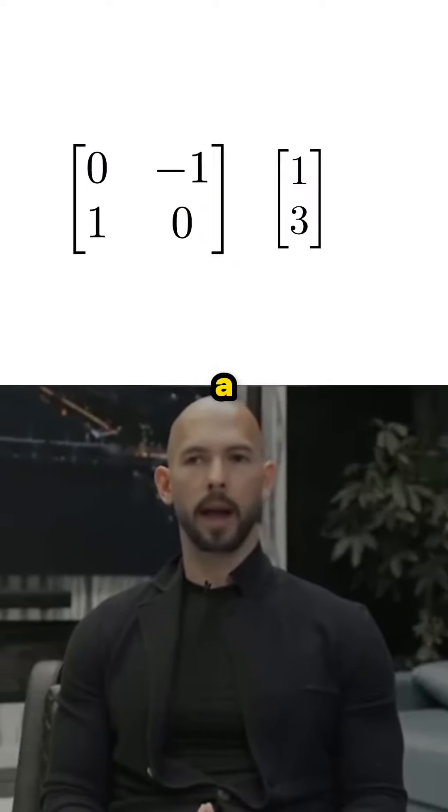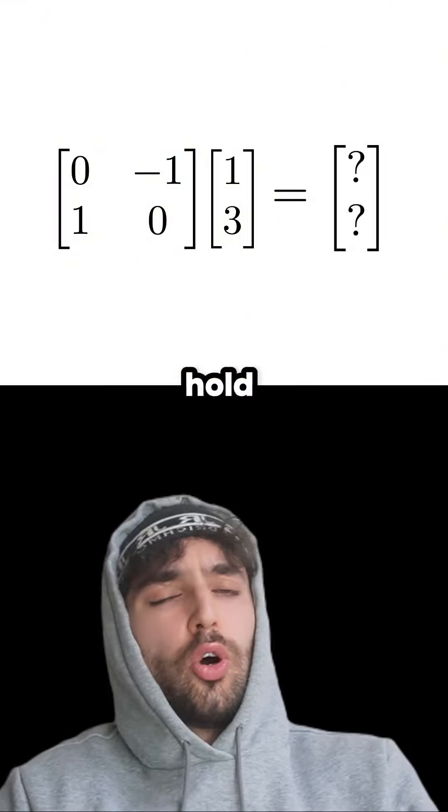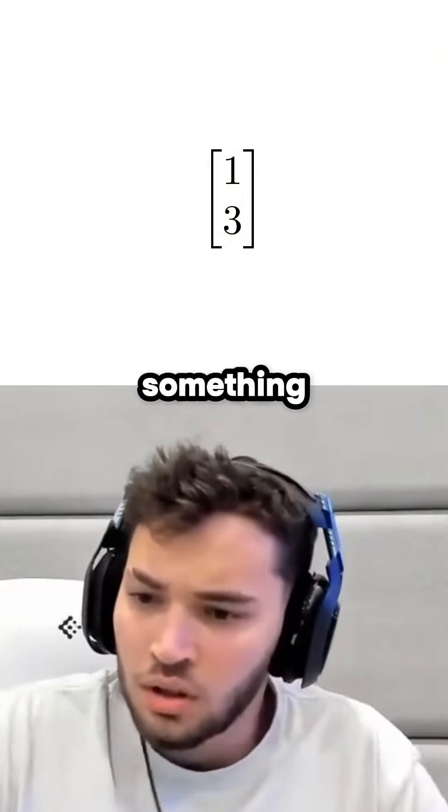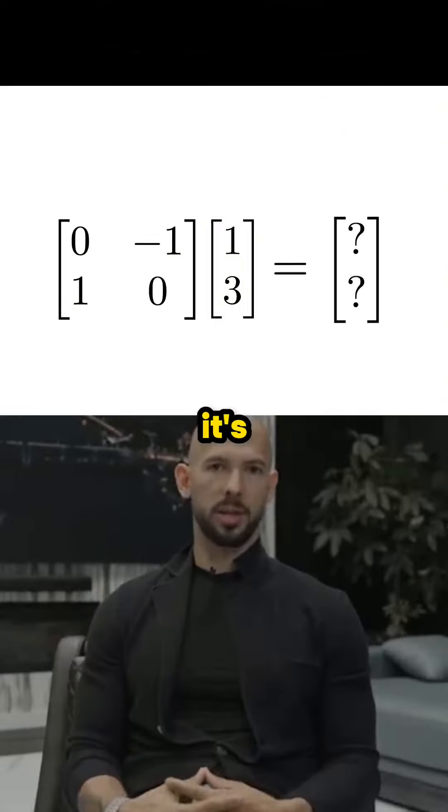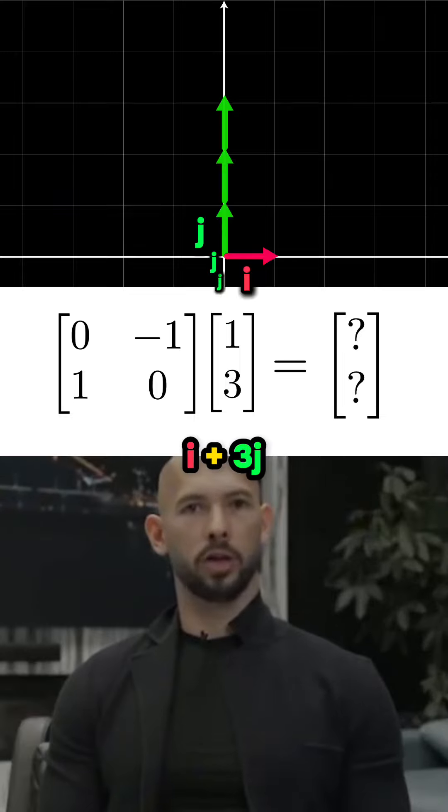Now listen, if we multiply a matrix by a vector, this will transform the vector. Wait, hold up, that's not a vector. A vector's like something times i plus something times j. It's just another way of writing vectors, bruv. This one would be 1i plus 3j.